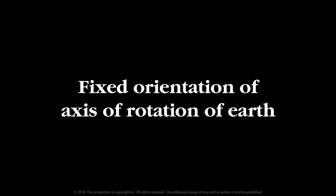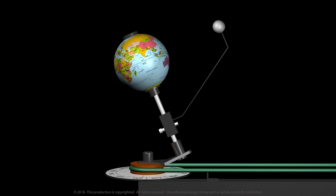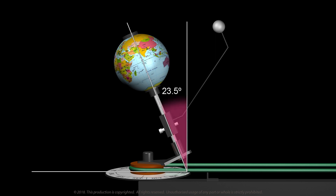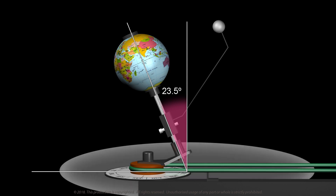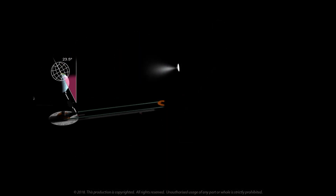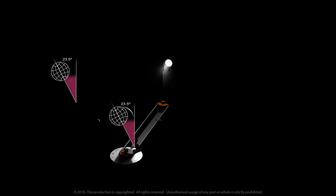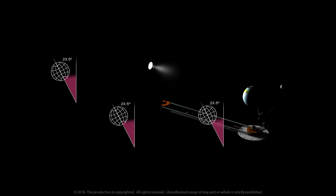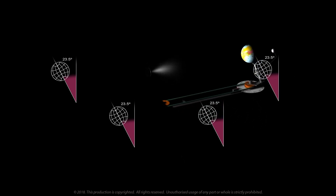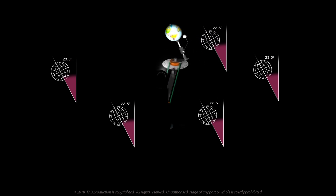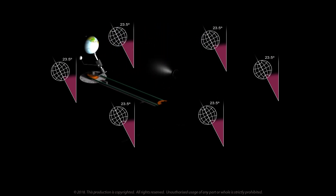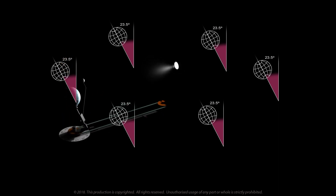Now let's see the fixed orientation of the axis of rotation of earth. This inclined shaft, which corresponds to the axis of rotation of earth, is fixed on the pulley which is free to rotate. This axis makes an angle of 23.5 degrees with the normal to the ecliptic plane, meaning the plane of the motion of earth around the sun. You can note carefully that the inclination of earth's axis is unchanged throughout the year — everywhere the inclination is 23.5 degrees.